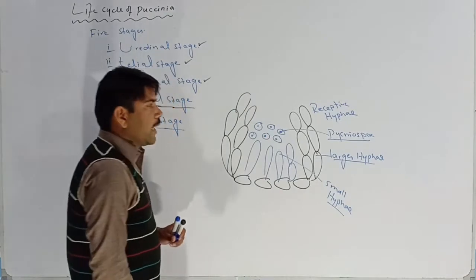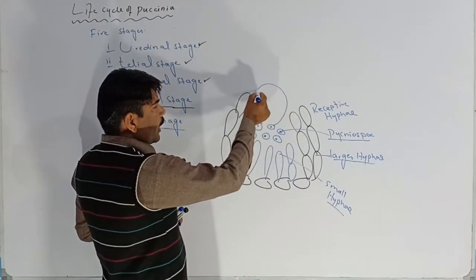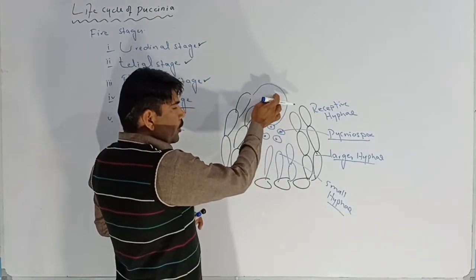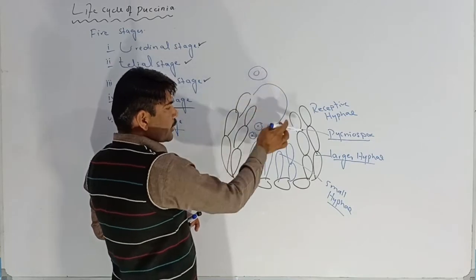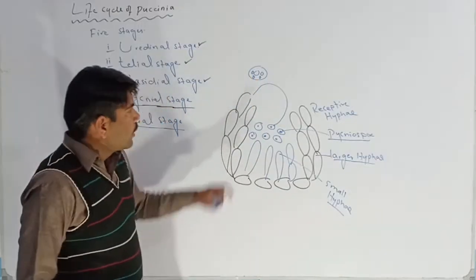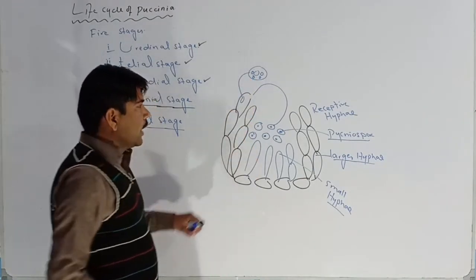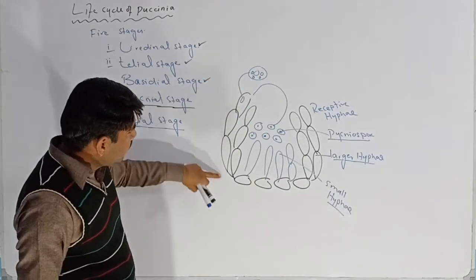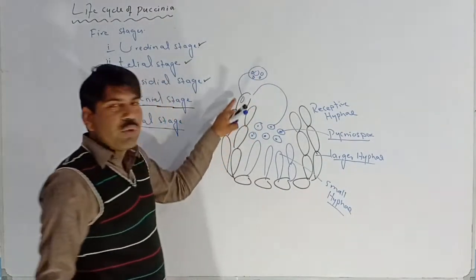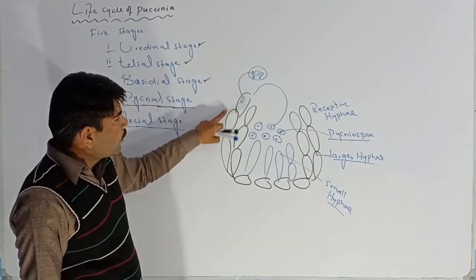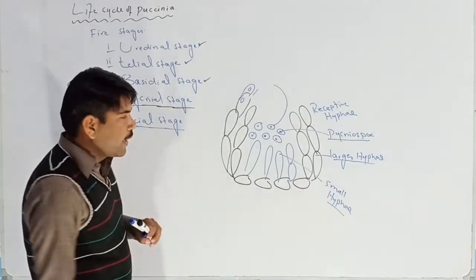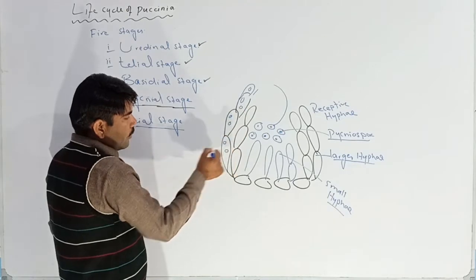A pycniospore migrates to the receptive hyphae. Before fusion, divisions take place inside the nucleus of the pycniospore and it becomes multi-nucleate. This multi-nucleated pycniospore fuses with the receptive hyphae. Before the fusion, the receptive hyphae is monokaryotic, but after fusion it becomes dikaryotic hyphae.